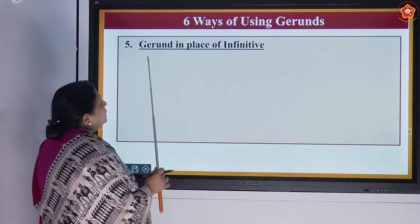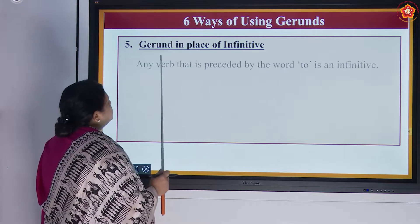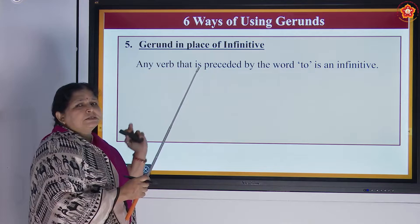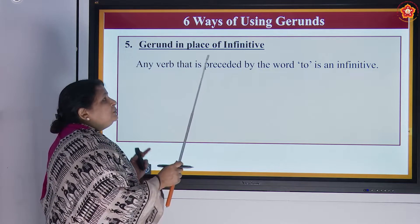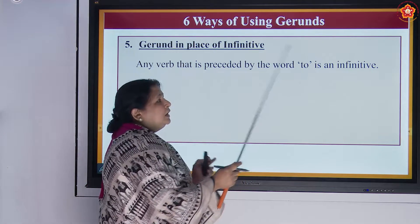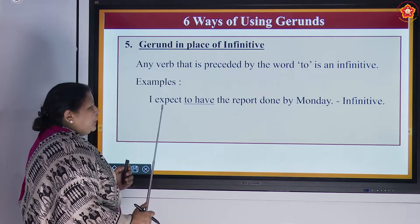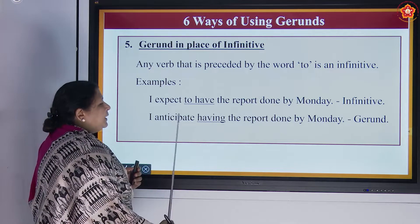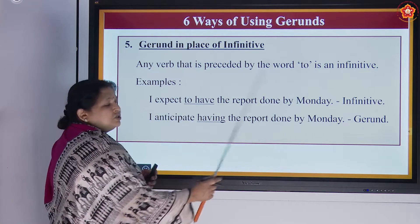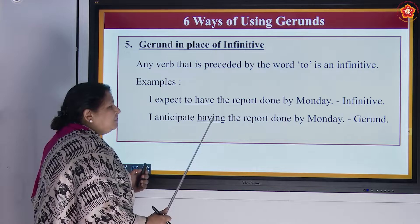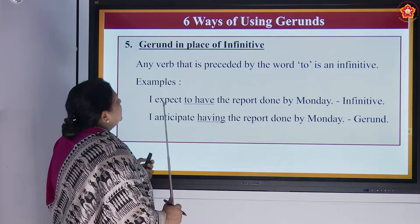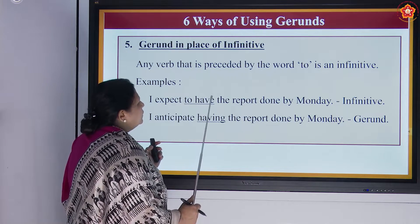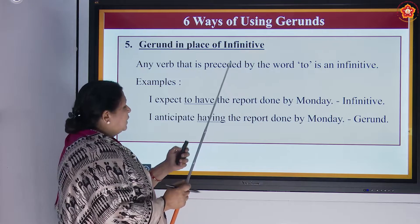The fifth type is gerund in place of infinitive. Any verb preceded by the word 'to' is an infinitive. For example: 'I expect to have the report done by Monday' — this is an infinitive. But 'I anticipate having the report done by Monday' — this is a gerund, because 'having' (H-A-V-I-N-G) acts as a gerund here in place of the infinitive 'to have.'